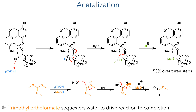Trimethyl orthoformate is present to sequester water and drive the reaction to completion. It is activated by PTSA, eliminating methanol to form a highly electrophilic intermediate that is attacked by water. This breaks down to eliminate methyl formate and another equivalent of methanol, destroying the water present in the reaction and ensuring it cannot hydrolyse the acetal product.